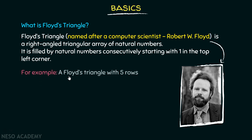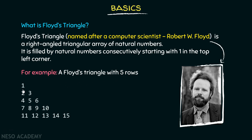For example, suppose we have a Floyd's triangle with five rows. Then a Floyd's triangle with five rows may look like this — starting from one in the top left corner, the rest of the natural numbers get printed consecutively in a right-angled triangle. This is how a Floyd's triangle may look like.